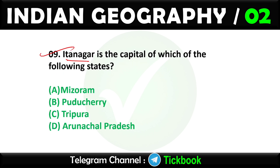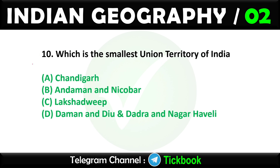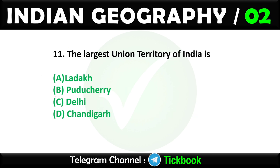Question nine: Itanagar is the capital of which of the following states? Option number D: Arunachal Pradesh. Question ten: Which is the smallest union territory of India? Option number C: Lakshadweep is the right answer.